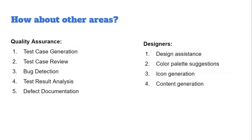For quality assurance teams, ChatGPT can generate test cases, review cases, perform bug detection on pieces of code, conduct test result analysis, and handle defect documentation. For designers, it can assist with understanding client concepts, generating color palettes based on requirements, and icon or content generation. These are examples of how it can be used across different departments in day-to-day work.